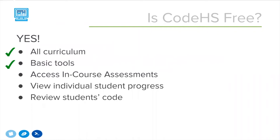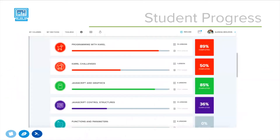The free plan also includes some in-course assessments such as quizzes and built-in projects. One common misconception is that you can't see student progress or grade their work on the free plan, but you can do both. We do offer a paid subscription that includes all teacher tools like classroom progress views, however the free plan includes many basic tools. On the free plan, you can click into each student's name on your roster and their detailed progress will appear.